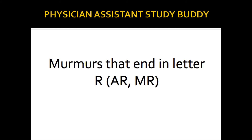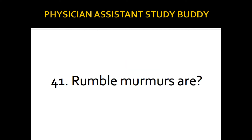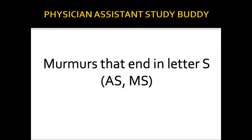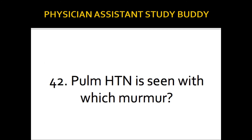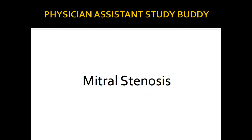Blowing murmurs — blowing in the morning, blow the roof off — are murmurs ending in the letter R: AR, MR. Rumble murmurs are murmurs ending in the letter S: AS, MS. Pulmonary hypertension is seen with mitral stenosis — Miss is coughing blood and may also have pulmonary hypertension.